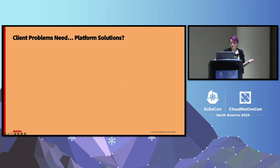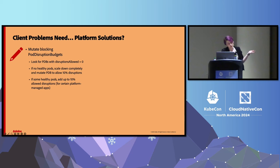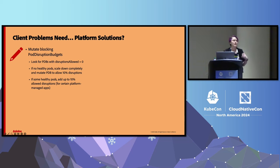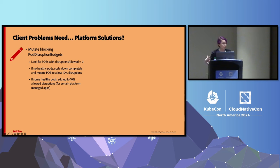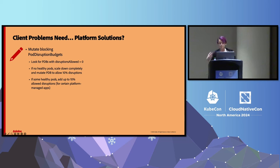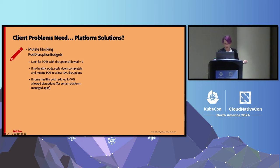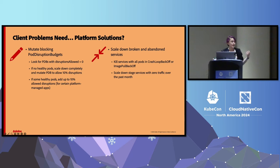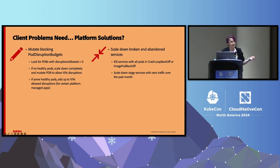So we thought client problems need platform solutions. We tried a couple things. We started mutating blocking pod disruption budgets — looking for ones with disruptions allowed equal to zero or PDBs in an undrainable state. If there were no healthy pods, we'd scale down the whole thing and mutate the PDB to allow 10% disruptions when it came back up. For platform-managed services like our namespace monitoring service, we'd add up to 10% allowed disruptions. We also started scaling down broken and abandoned services — if all pods were in crash loop backoff, we killed them. We scaled down stage services that had zero traffic for at least a month.